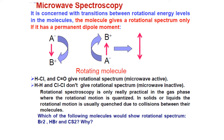Now, which of the following molecules will show rotational spectra? Bromine is a homonuclear diatomic molecule, so it will not be rotationally active. HBr has a difference in electronegativity — hydrogen is less electronegative and bromine is more electronegative — so there is a permanent dipole moment and this molecule will be rotationally active. What about carbon disulfide? Carbon disulfide is a linear molecule with carbon in the center and double-bonded sulfur on both sides. The electronegativity of carbon and sulfur is almost comparable, so there is no dipole moment and the molecule is rotationally inactive.